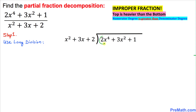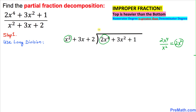Looking at the dividend, our leading term is 2x⁴. And in the divisor, the leading term is x². We are going to divide them, and simplifying gives us 2x². Whatever we get comes on the top — so we write 2x² there.